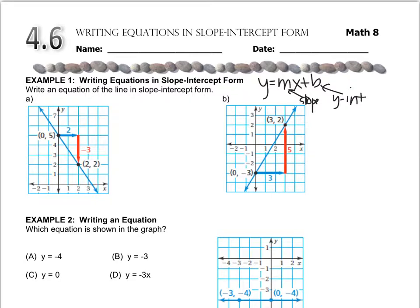In order to write the equation we need the slope and the intercept. The intercept is going to be the easier one to find because you can just look on the graph. It's right here at (0, 5). So the b value is 5.